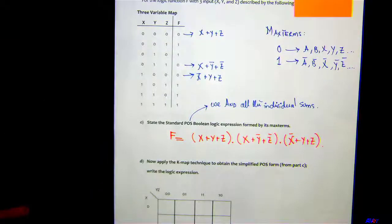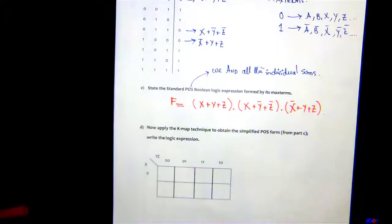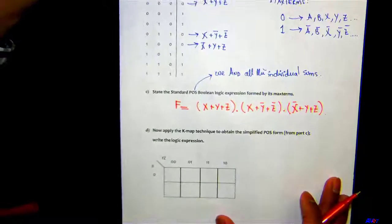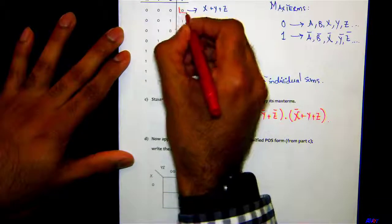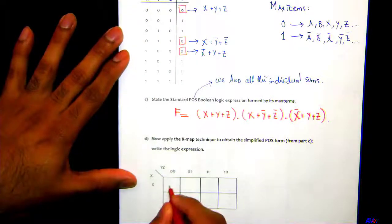Part D: apply the K-map technique to obtain the simplified POS form from part C. Write the logic expression. Again we have the truth table right here. We look at the max terms, which are these right here. We know we have three of these. Let's put it in the K-map.